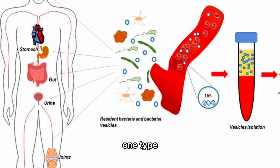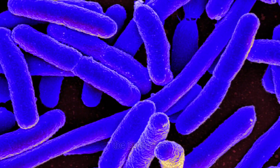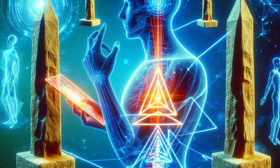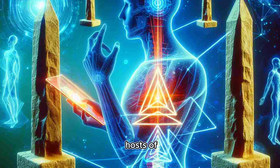One type of host cell from our microbiome, the bacterium Streptococcus sanguinis, has been identified as a carrier of an obelisk. While the hosts of other obelisks are not yet known, it is reasonable to assume that a fraction may be present in bacteria.